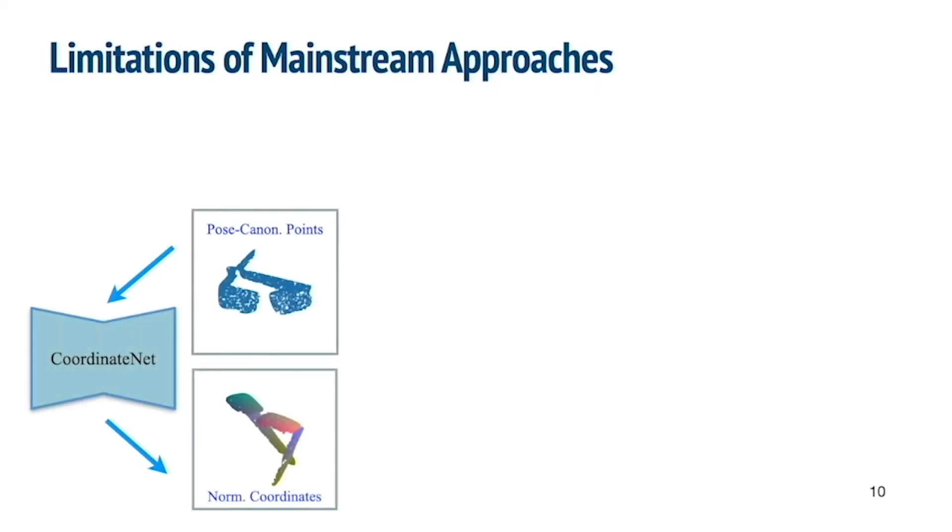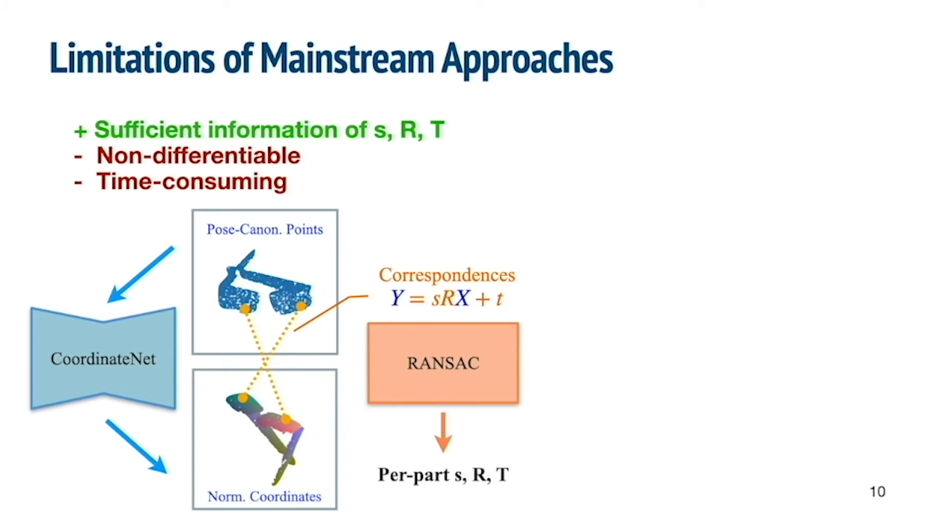Based on the pose canonicalized point clouds, there are two mainstream approaches to estimate pose, limited in different ways. One common approach is to regress normalized coordinates. Then based on the correspondences, use RANSAC to solve for part poses. This approach captures category level shape prior and works well under challenging conditions. However, the involved RANSAC step is non-differentiable and time-consuming.